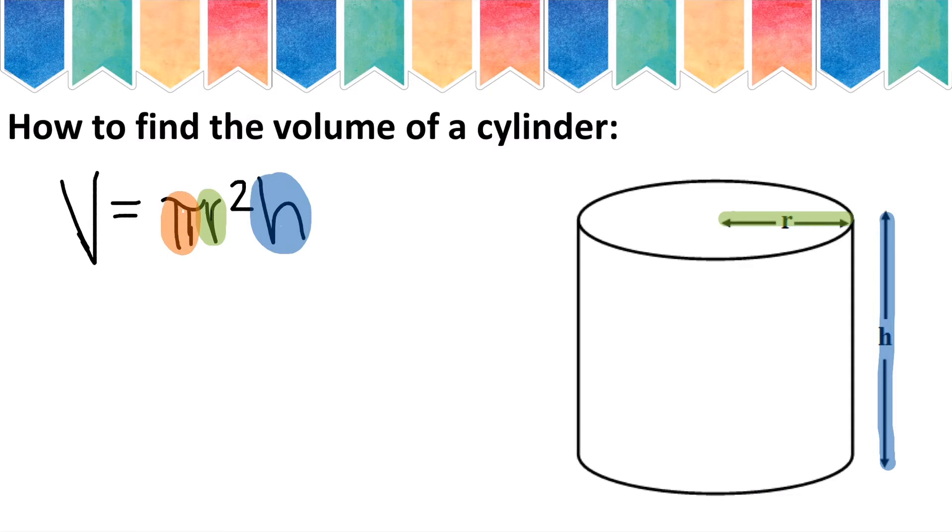If your calculator does not have a pi button, you can simply use 3.14 as an approximation for pi. So let's do a couple of examples.